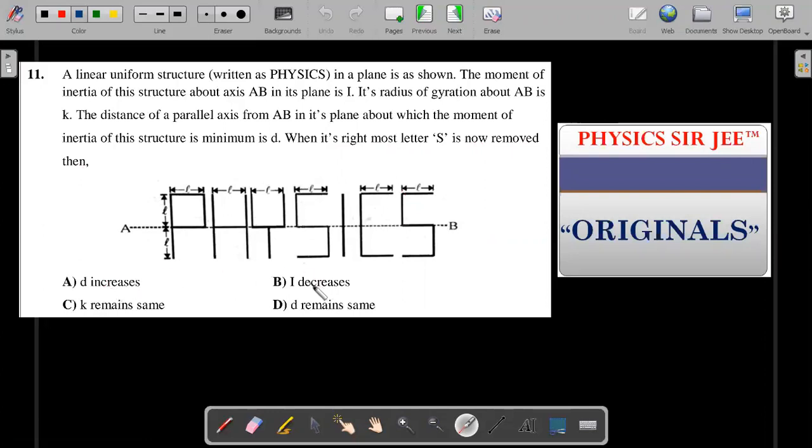When its rightmost letter capital S is now removed then what happens to each of these parameters? D increases, I decreases, K remains same and D remains same. One or more than one options may be correct. So just have a try for two or three minutes, have fun and do come back. So it'd be really intriguing to know what would be the correct answer.